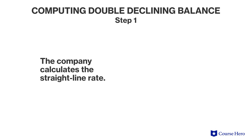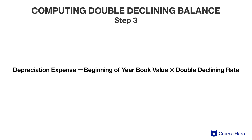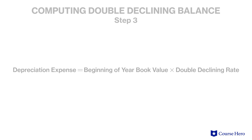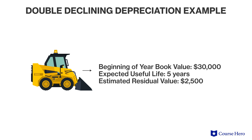Computing double declining balance depreciation is a three-step process. First, the company calculates the straight line rate, which is one divided by the expected useful life. Second, the straight line rate is doubled. Third, the doubled rate is applied to the asset's book value — note that we are using book value, not historical cost or depreciable cost. The residual value doesn't come into play until the final year. Suppose that Big Truck Company buys a new piece of equipment for $30,000 expected to have a useful life of five years and will likely be worth $2,500 at the end of its life. The company uses the double declining method of depreciation.